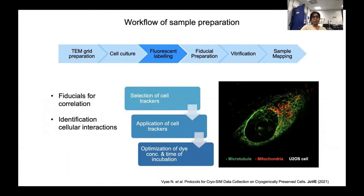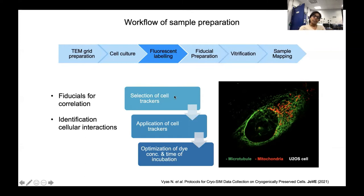The next step in sample preparation is fluorescent labeling. Here in the slide you see a beautiful image of U2-OS cells labeled with microtubules and mitochondria markers. Fluorescent labels are different cell trackers which may label microtubules, mitochondria, or other organelles like lysosomes and ER, depending on the objectives of the project. Selection of cell trackers is based on the project objectives and optimized for the application. These fluorescent markers have two important purposes: they serve as fiducials for correlations, and they give more detail about cellular interactions and ultrastructures.